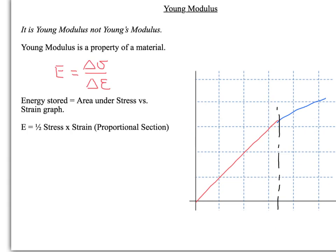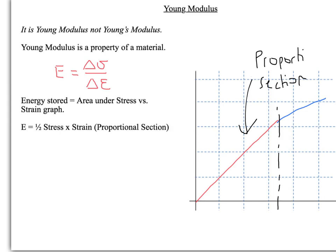The next thing to look at is the Young modulus — not 'Young's modulus'; it is the Young modulus. It is a property of a material, and it is the ratio between the stress and the strain in a material. You can calculate the Young modulus on the directly proportional section of the stress-strain graph — since it goes through zero, it is properly directly proportional. The Young modulus is the change in stress divided by the change in strain, i.e., the gradient of the stress-strain graph.